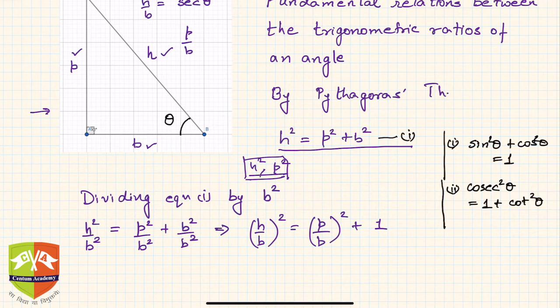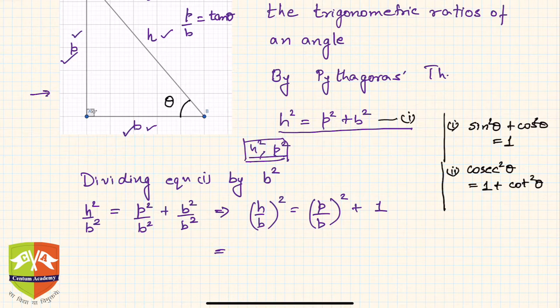What about p by b? P upon b is nothing but tan theta. So we can replace or substitute them here. H by b I can write as secant theta whole square equals tan theta whole squared plus one. This is another very important relationship.